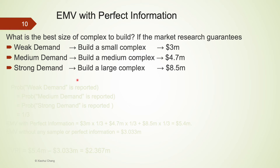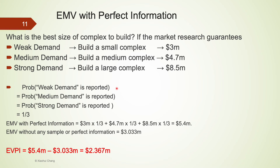Let's summarize all the information together. We now have the best alternative under each state of nature and their respective payoffs. To calculate EMV with perfect information, we need the probability of each state of nature. This company believes the probability of each of the three states is exactly one-third. So EMV with perfect information is ($3 million × 1/3) + ($4.7 million × 1/3) + ($8.5 million × 1/3), which equals $5.4 million. With EMV without any information at $3.033 million, we can calculate EVPI to be $2.367 million.